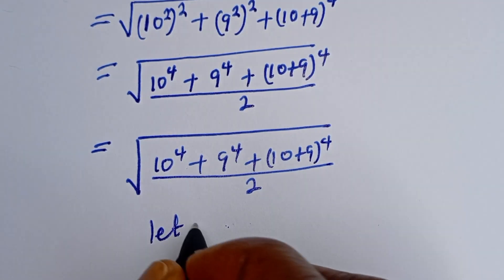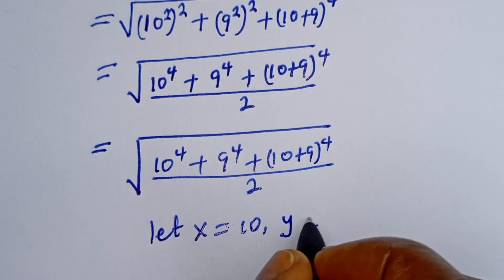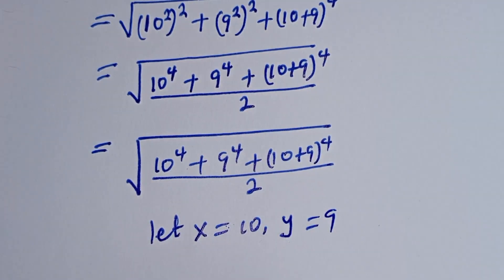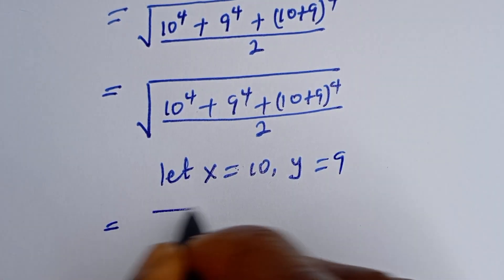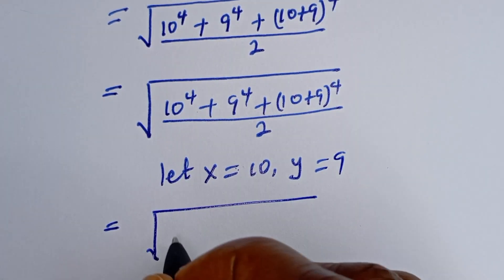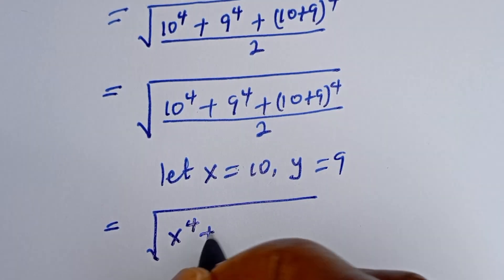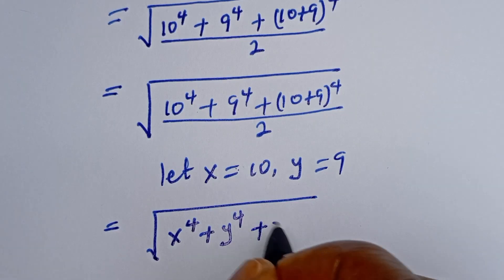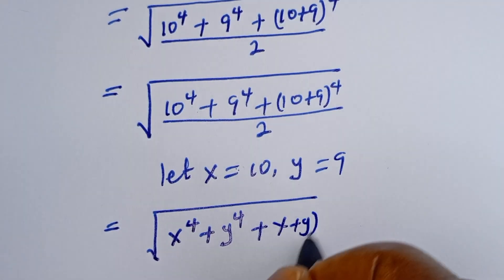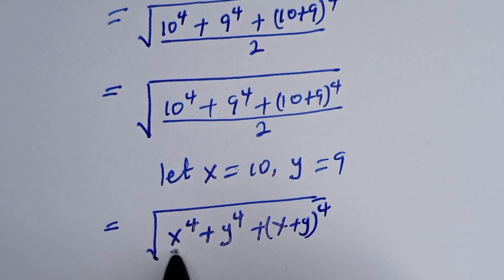Let S equal 10 and Y equal 9. So this is equal to the square root of S to the power of 4 plus Y to the power of 4 plus (S plus Y) to the power of 4, then divided by 2.